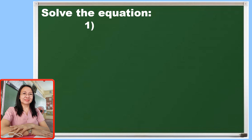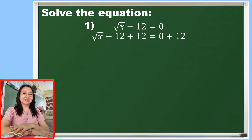For number 1, the given is the square root of x minus 12 is equal to 0. Since the radical is on the left side already, let us put the constant on the right side by applying the addition property of equality. By adding both sides of the equation by 12, negative 12 plus 12 becomes 0 and 0 plus 12 is equal to 12. So the equation becomes the square root of x is equal to 12.